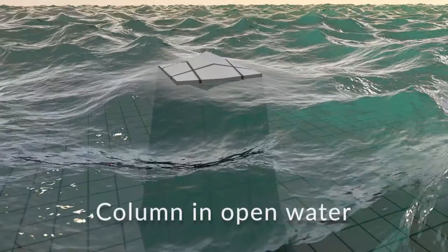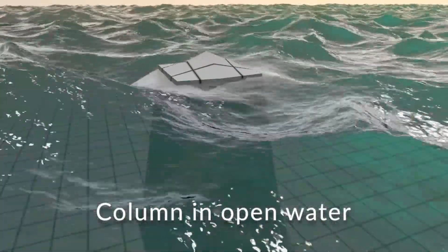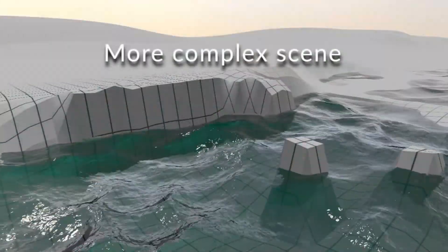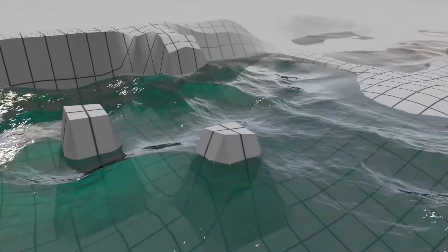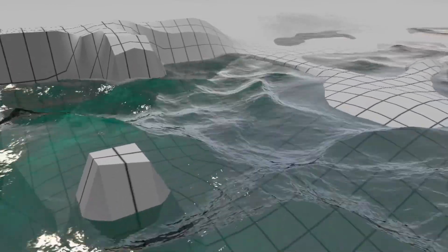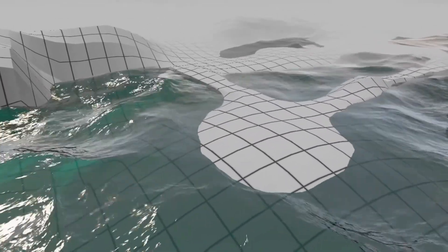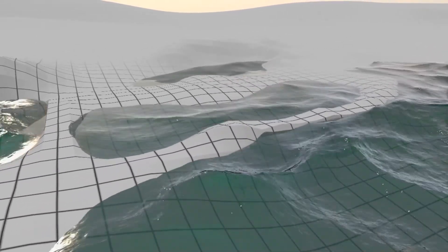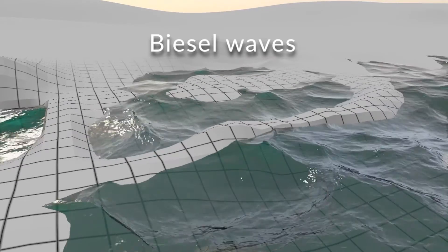Now let's have a look at some results. Here we show wave cages applied to different scenes. Note how the cages calm down the water around this column, such that no artifacts occur. Also note how the water behaves in a plausible way at shallow and at steep boundaries. By contrast, interpenetrations arise when not using the wave cages.